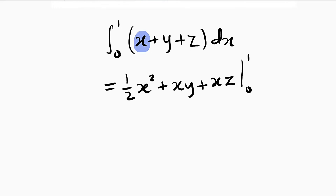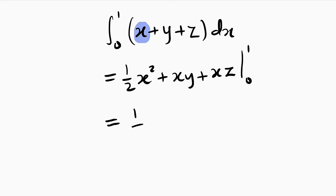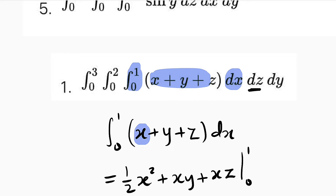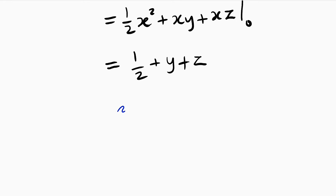Now let us substitute the boundaries. This is equal to 1 over 2; wherever we see x we replace it by 1. 1 squared is 1, times half is half, plus 1 times y is y, plus z. We don't have to substitute the lower bound because it is going to make everything 0. So this is our new function and we are going to integrate this function with respect to z using the second integral from 0 to 2. So we have the integral from 0 to 2 of 1 over 2 plus y plus z with respect to z.